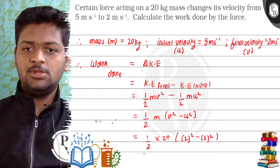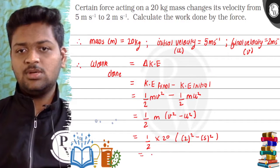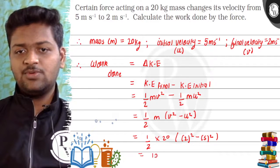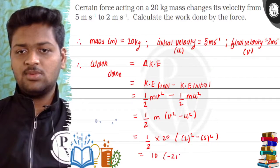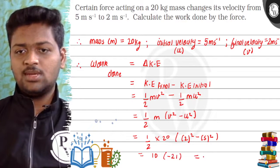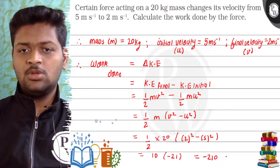So this will be half into 20, that's 10, times 2 squared is 4 minus 5 squared is 25. That will be minus 21, so it will be equal to minus 210 joules.